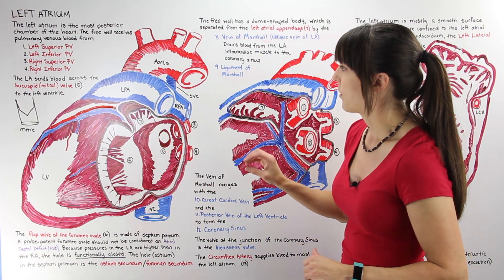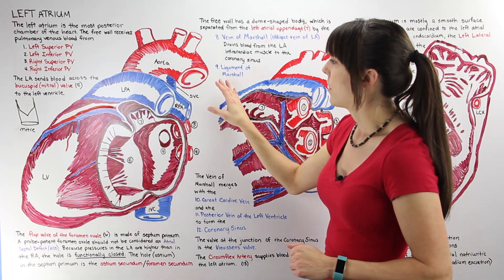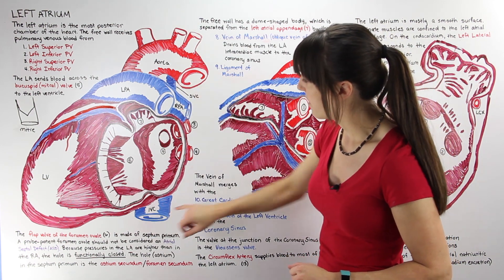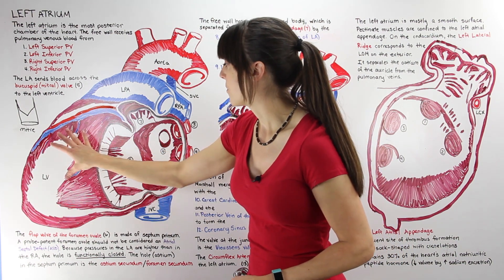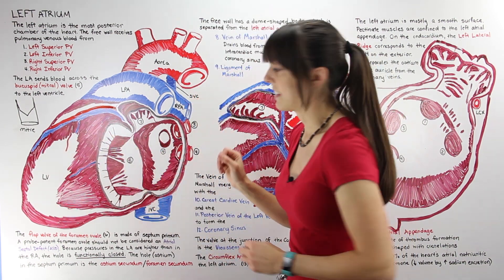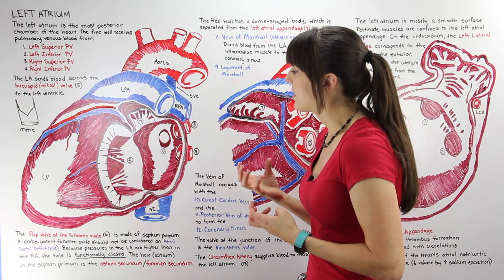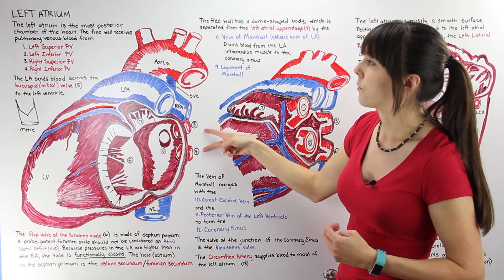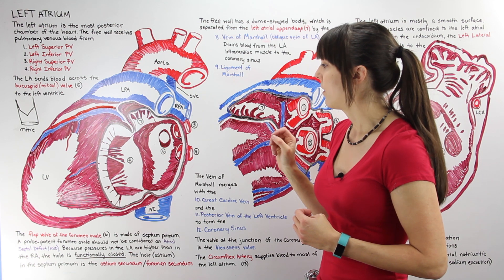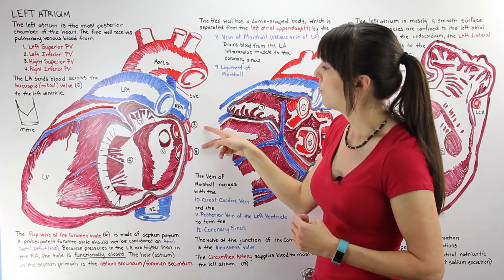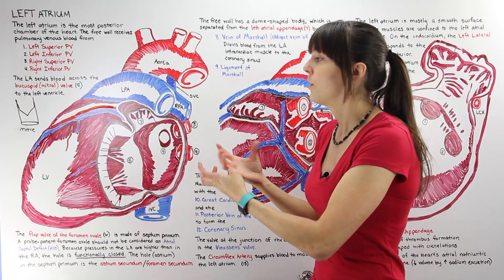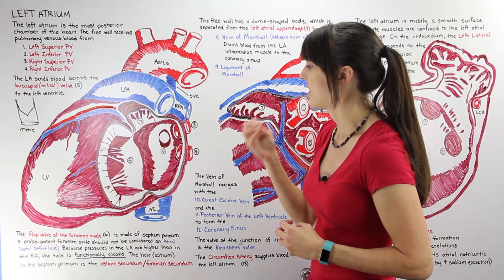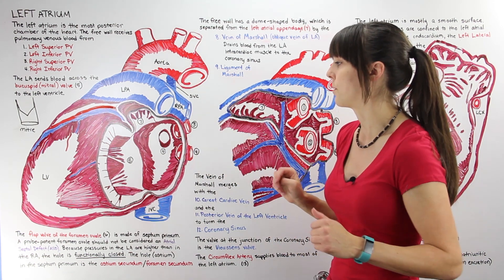Looking at this diagram to orient ourselves: the aorta is coming up, we have the left and right pulmonary arteries, behind that the superior and inferior vena cava, and here's the left ventricle. We've taken a bite out of the left atrium — removed a section so that we can see inside. Now, there are four pulmonary veins that drain into this chamber, but only two are seen in this diagram. The other two were in the section we dissected out, which we'll discuss in a moment.